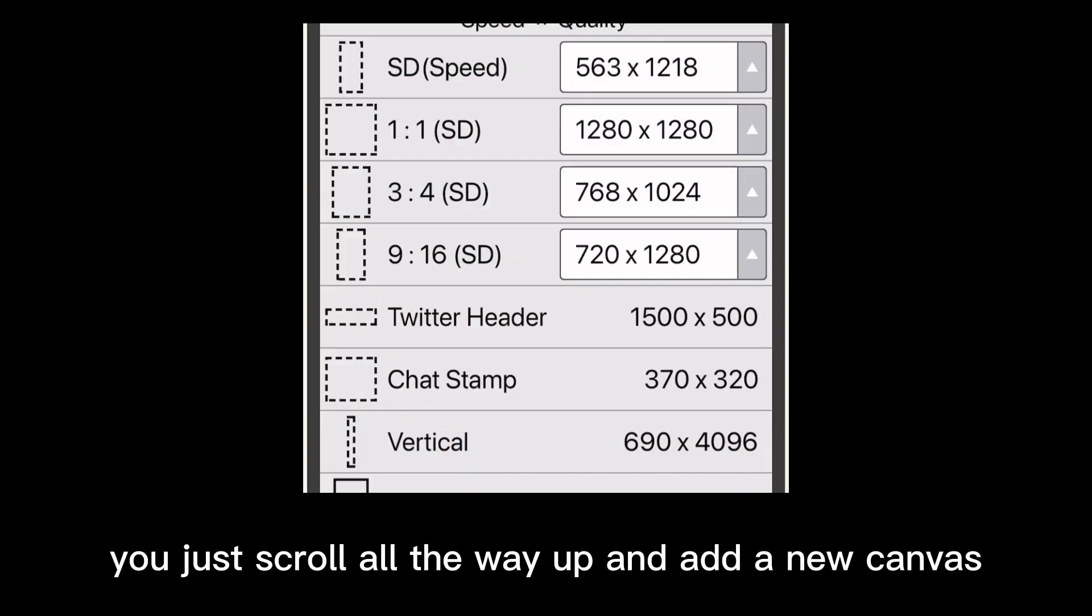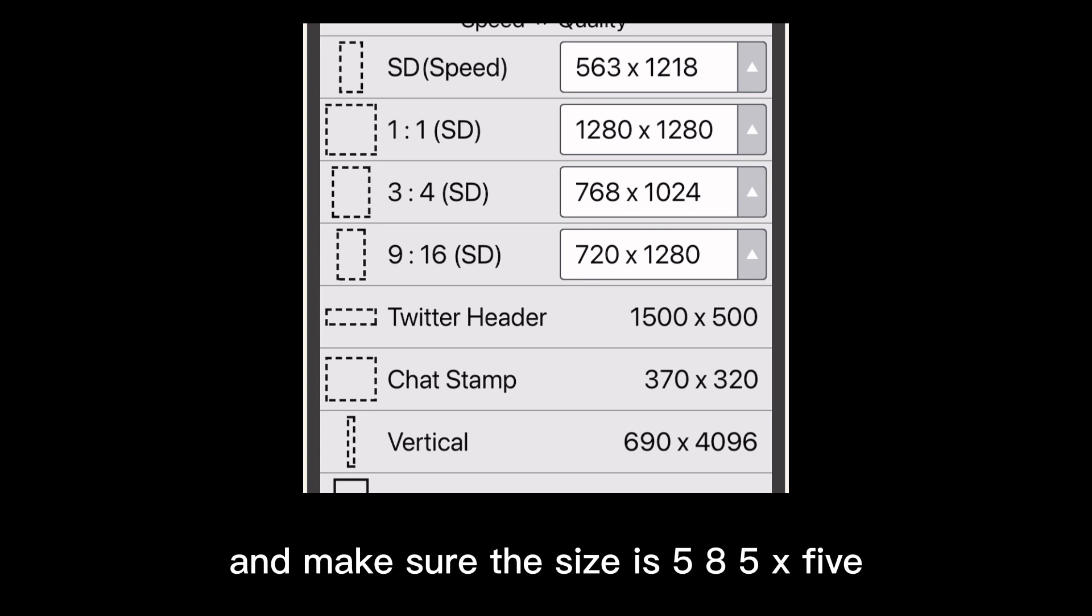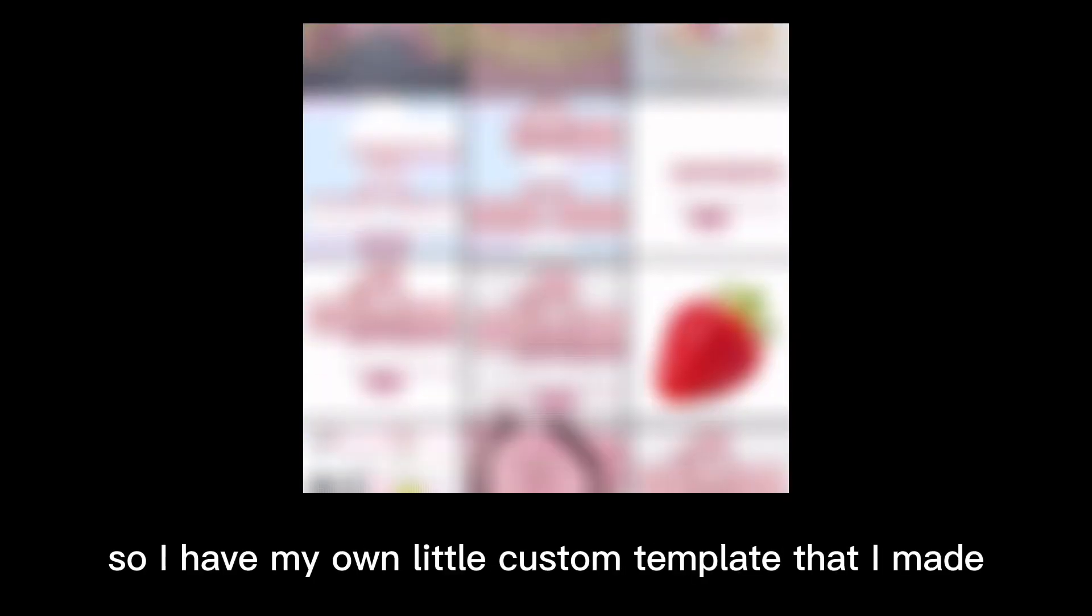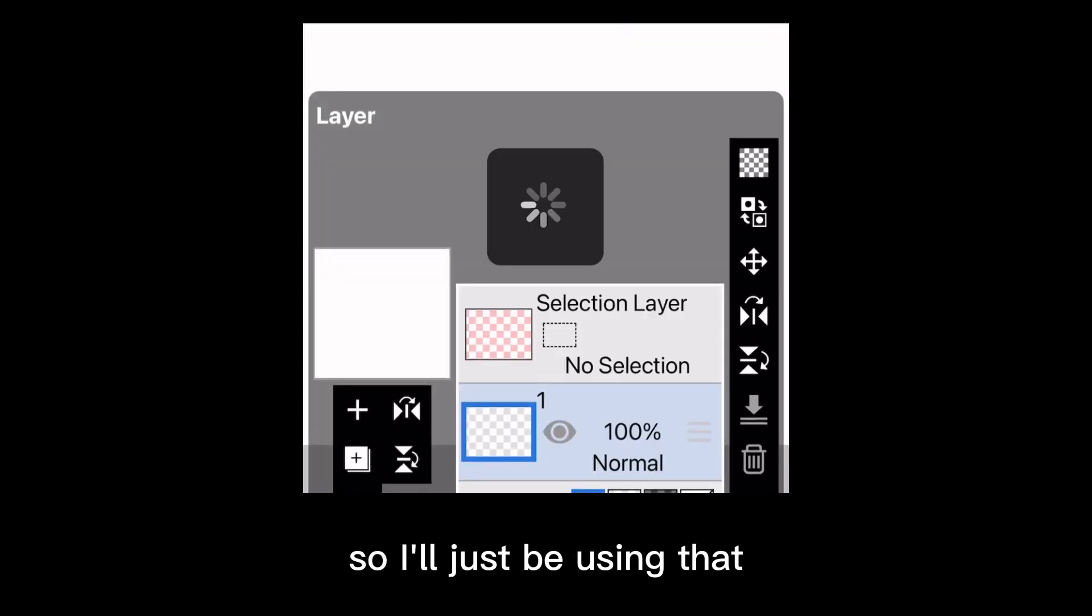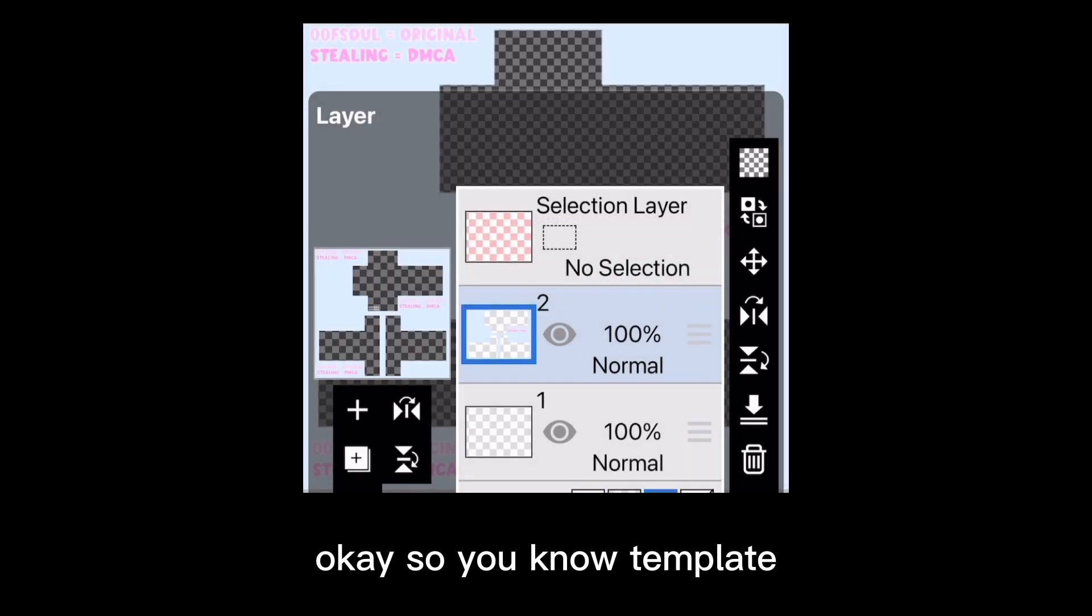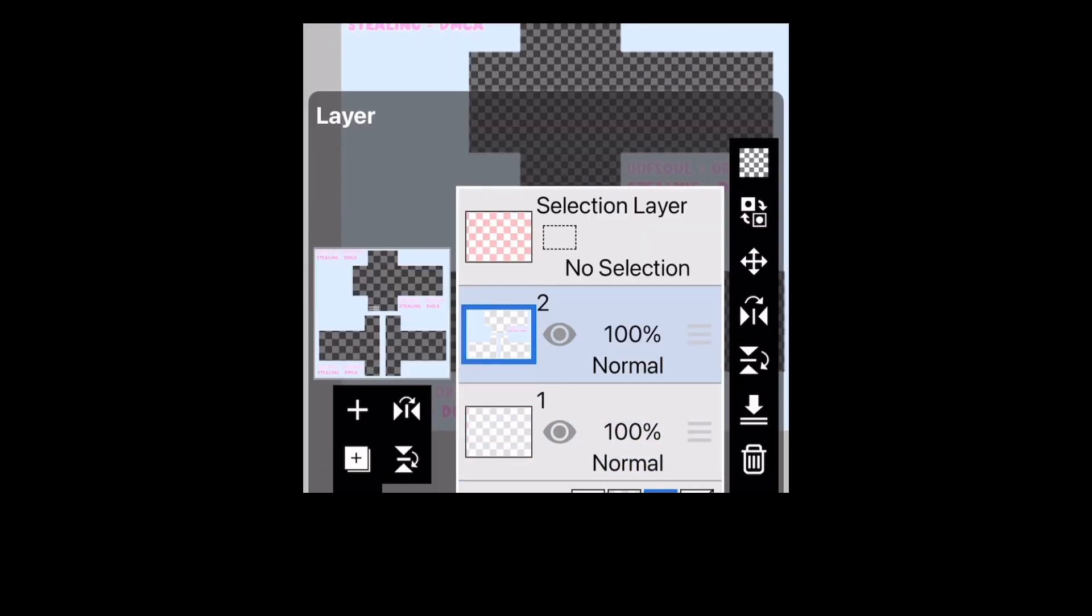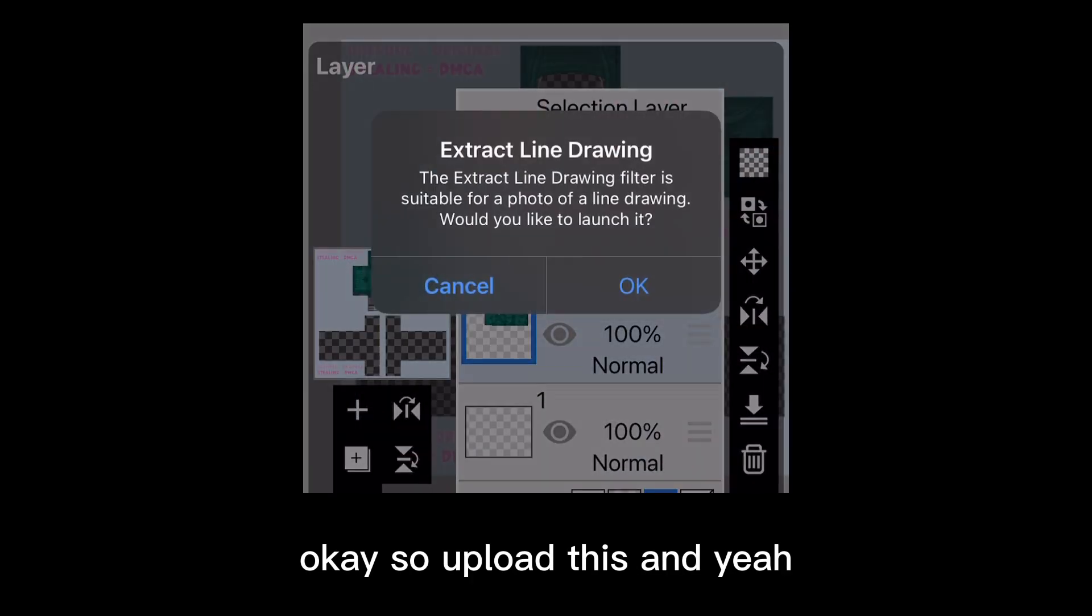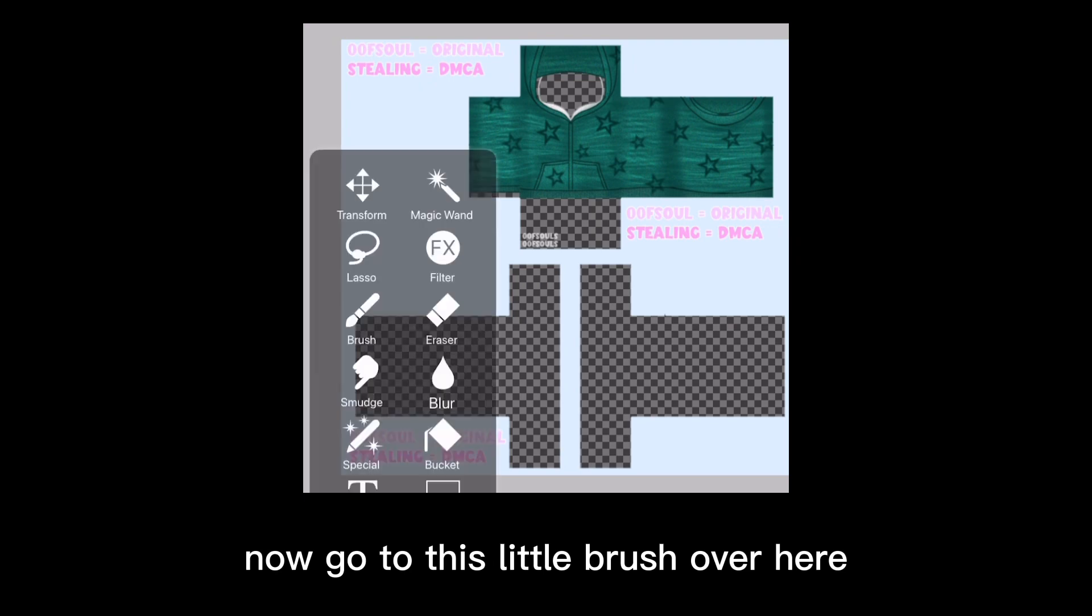Once you save that as a transparent PNG, you just scroll all the way up and add a new canvas. Make sure the size is 585 x 559, click okay, and then upload your template. I have my own little custom template that I made not too long ago, so I'll just be using that.